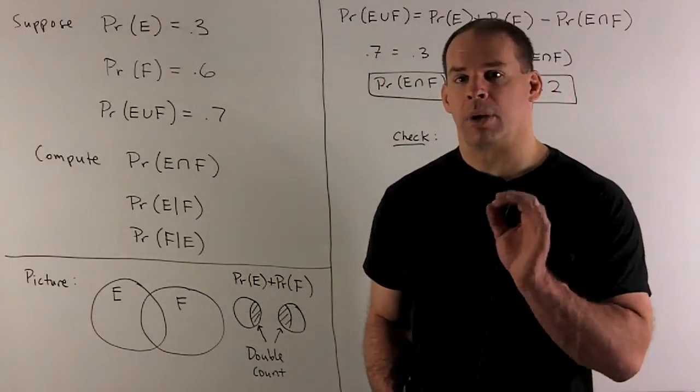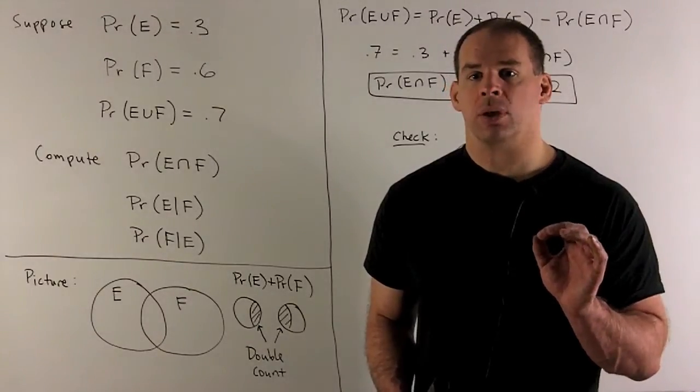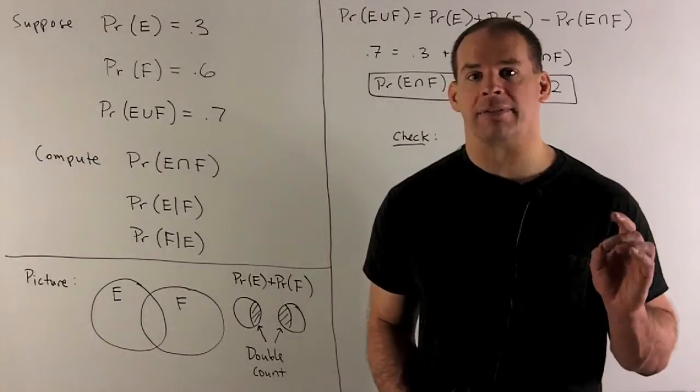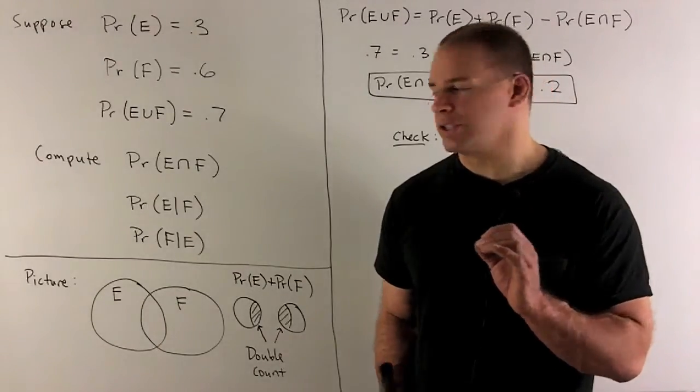If I want to take the probability of the union of E and F, what happens? Well, it's not going to be quite probability of E plus probability of F. That would only happen if the intersection was empty.